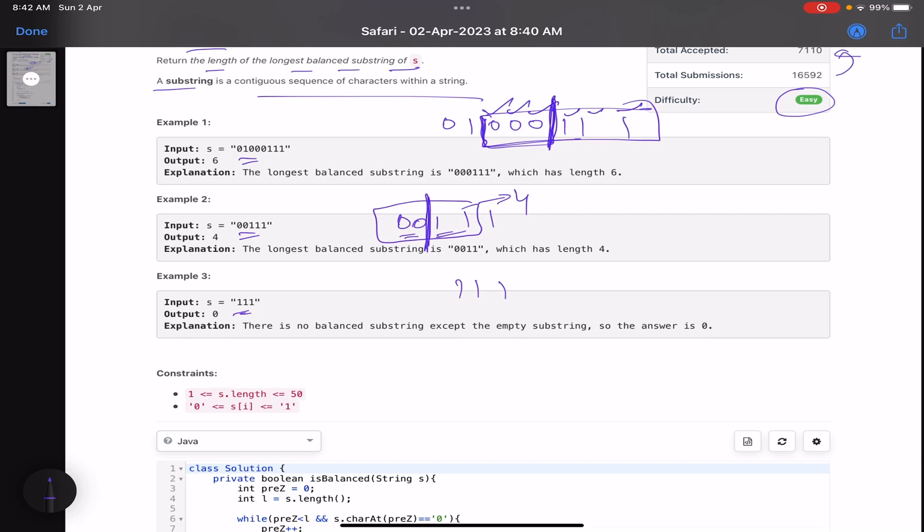What about this? 1, 1, 1. Now, just see here, you don't have any zeros. You can't pick any substring which is a balanced string, right? So hence, your answer will be 0 in this case.